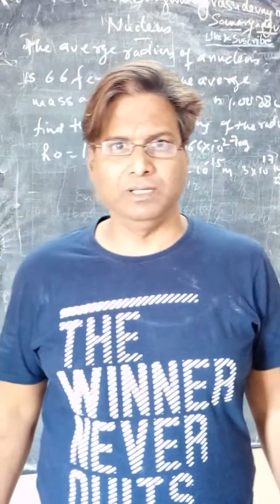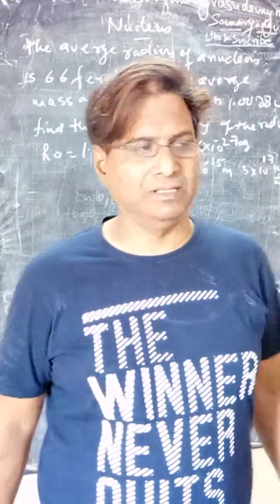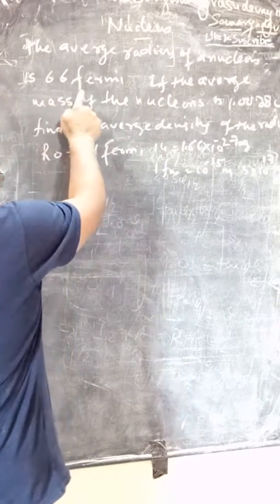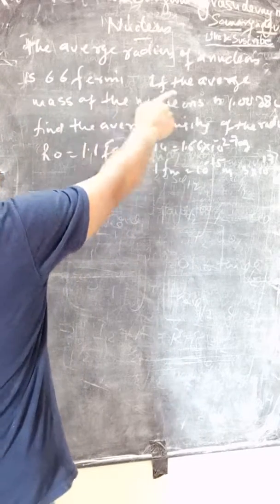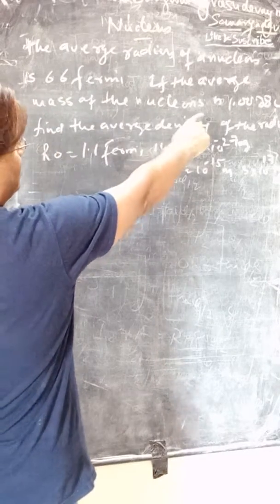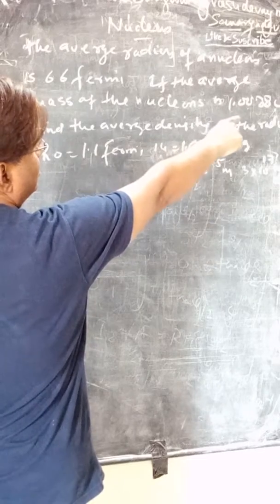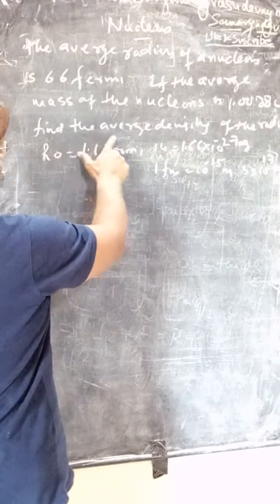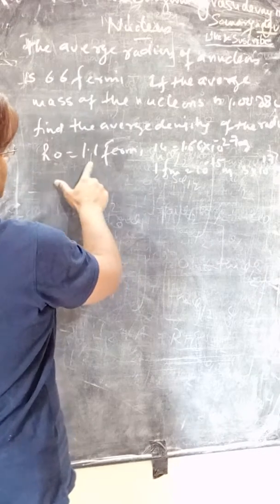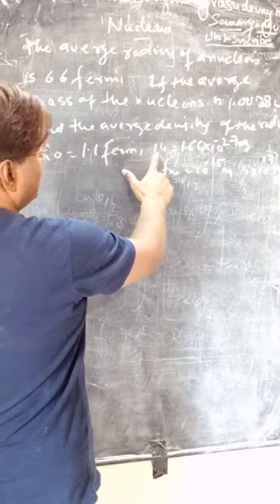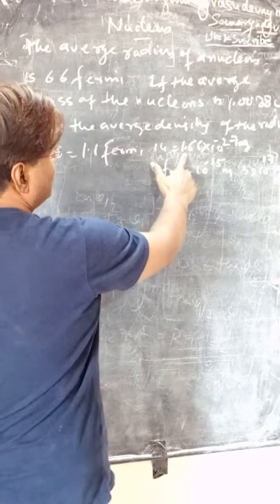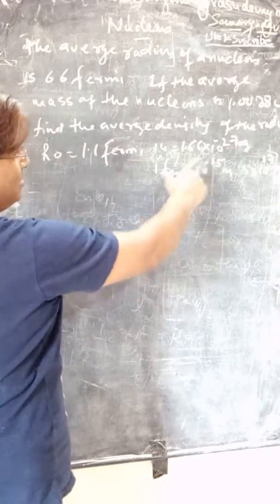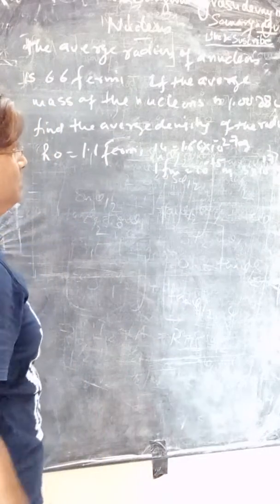Today in Chapter Nucleus, we have a numerical problem. The average radius of the nucleus is 6.6 fm, the average mass of the nucleus is 1.0088 u (atomic mass units). We need to find the average density. Given: r₀ = 1.1 fm, one atomic mass unit = 1.66 × 10⁻²⁷ kg, and 1 fm = 10⁻¹⁵ meter.